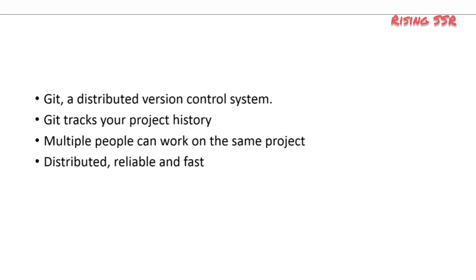What's the difference between Git and GitHub? To make it simple, Git is a tool. And GitHub is quite a different thing — it provides services that are related to Git. It's a website that helps you manage Git-controlled projects.